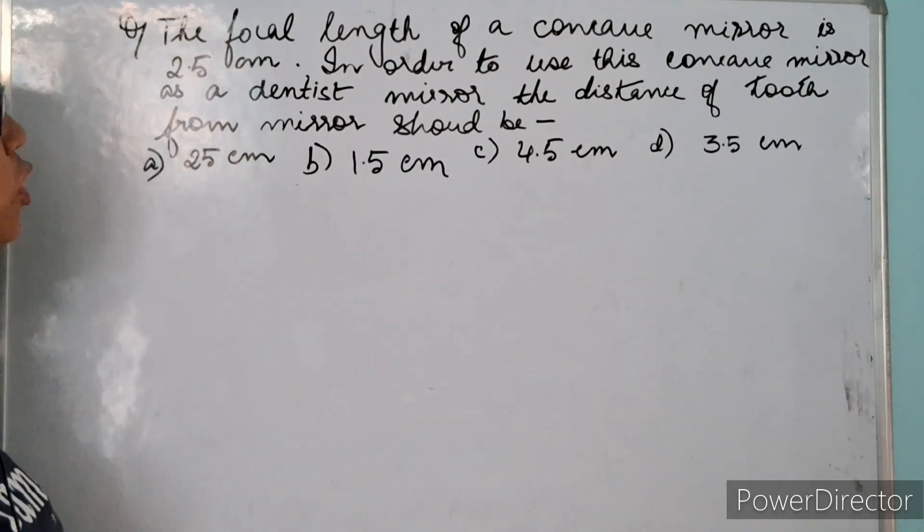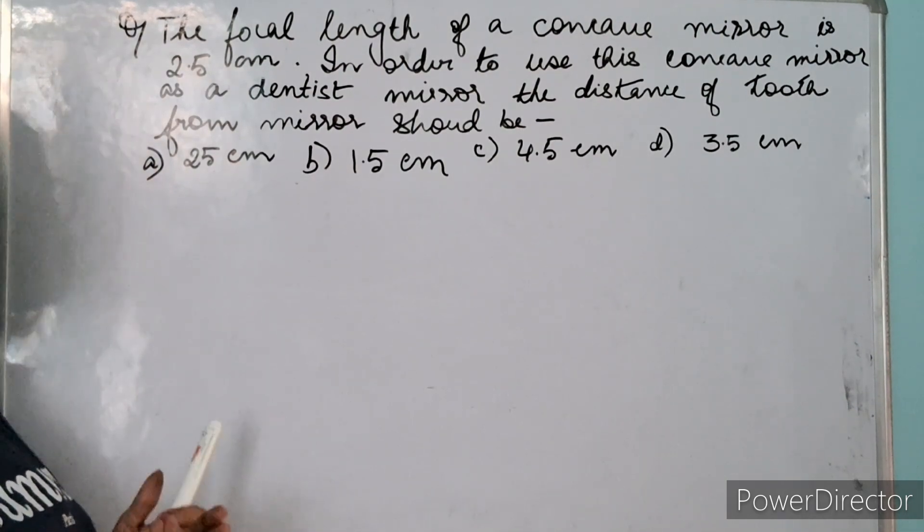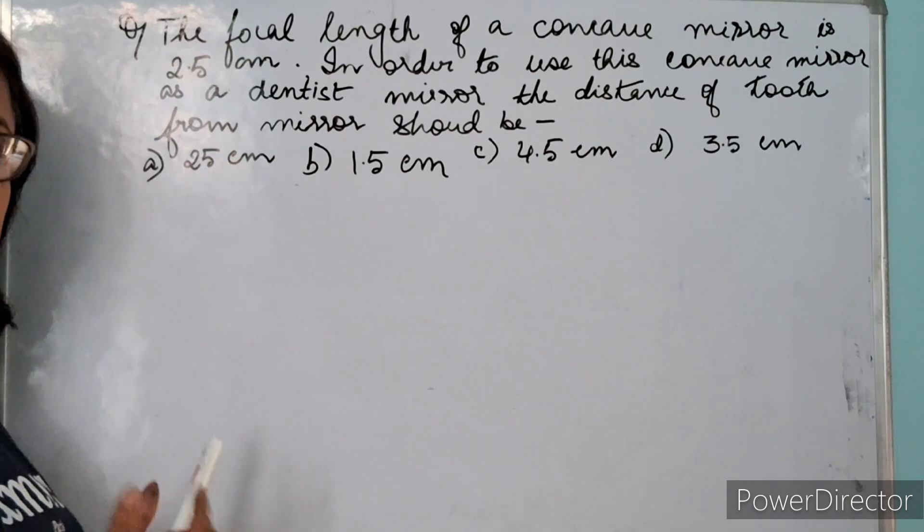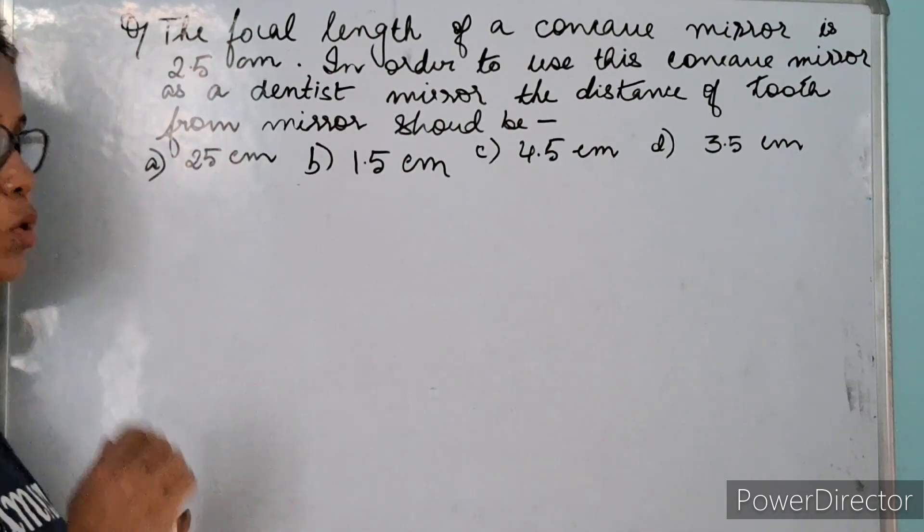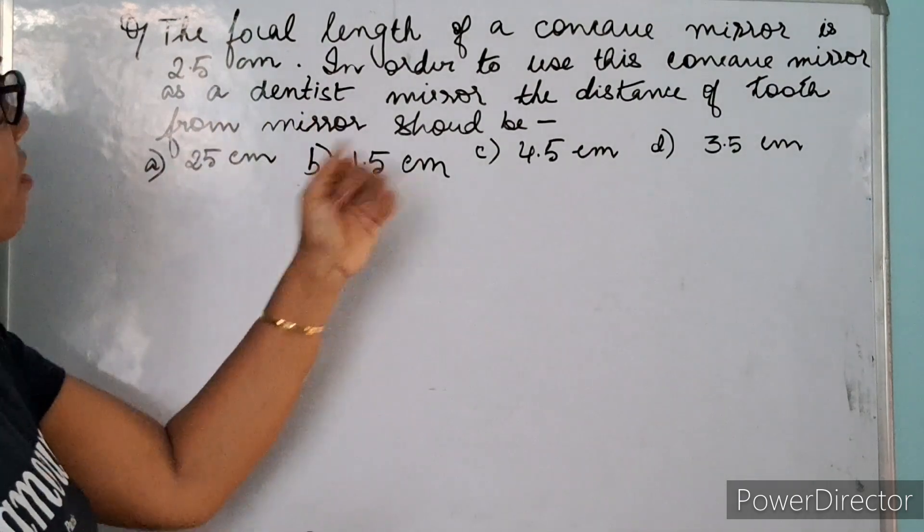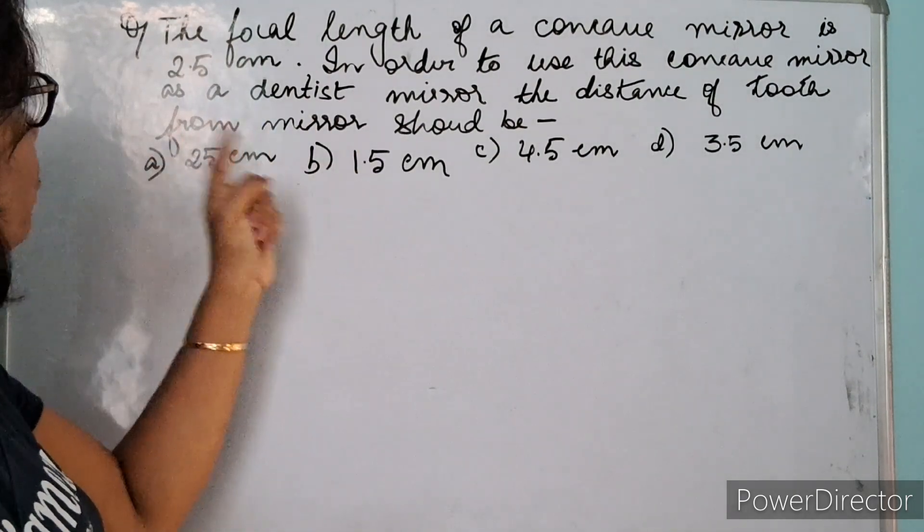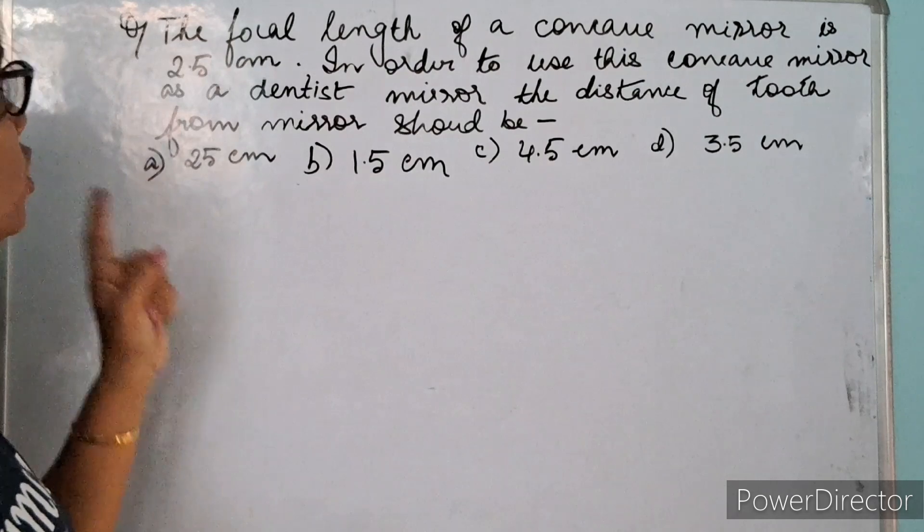According to the question, a dentist wants to use a concave mirror. Why does a dentist use a concave mirror? To get a magnified and erect image of the object. Here the object is the tooth. Now the dentist wants to use this mirror and we have to find the distance of the tooth from the mirror.